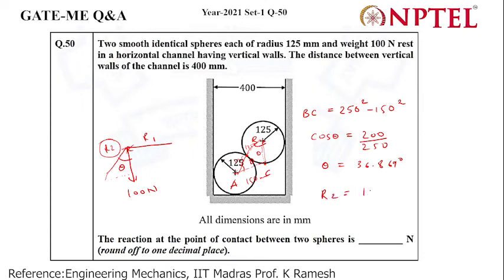so R2 equals 100 divided by (200 divided by 250), which gives R2 equals 125 Newton.